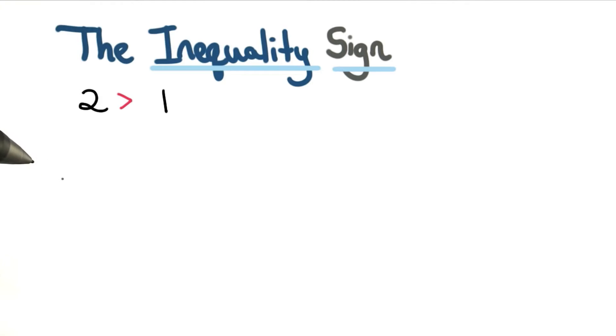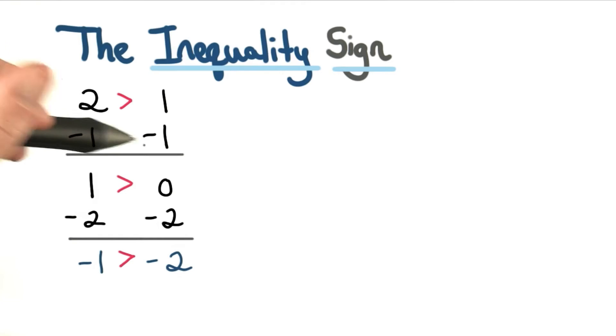I'm going to start by not doing division or multiplication. I'm going to do subtraction. First I subtract 1 from both sides, and I get 1 is greater than 0. Then I can subtract 2 from both sides, and I get negative 1 is greater than negative 2.